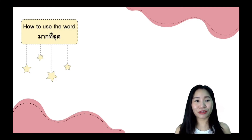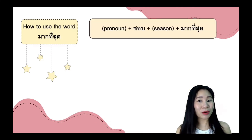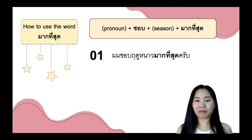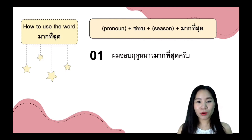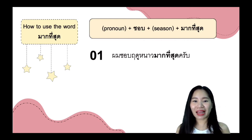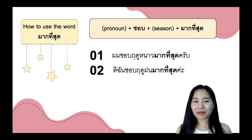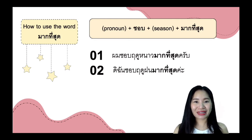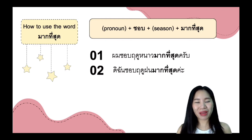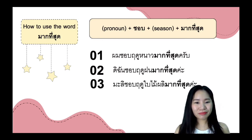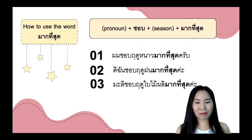Now let's see how to use the word 'mak thi sut,' which means 'the most.' Put the pronoun and 'chop,' then the season, followed by 'mak thi sut.' For example: 'Phom chop reudoo nao mak thi sut khrap' — I like winter the most. 'Dichan chop reudoo fon mak thi sut ka' — I like rainy season the most. And 'Mali chop reudoo bai mai phli mak thi sut' — Mali likes spring the most.